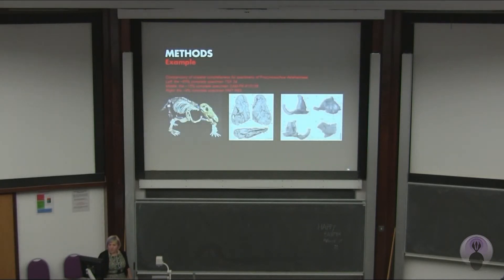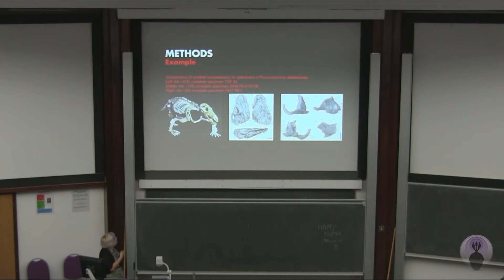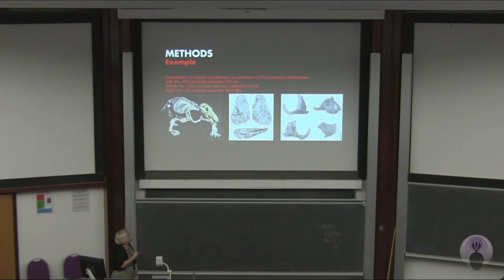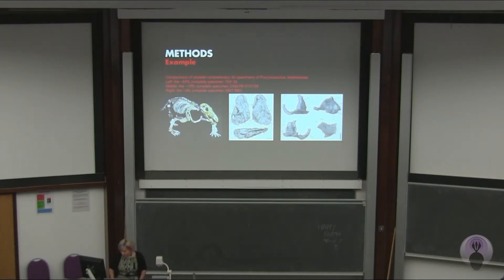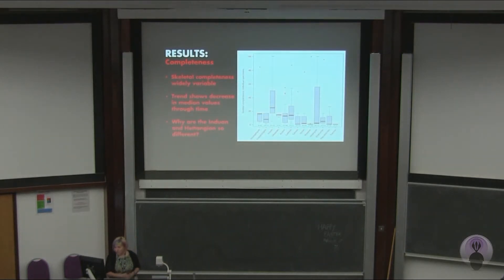This is an example of what I did. This is all a single species, Procynosuchus — this specimen was about 65 percent complete, whereas this one is about 15 percent complete, and this would be about four percent complete. That's the sort of thing I was doing to try and determine species completeness.